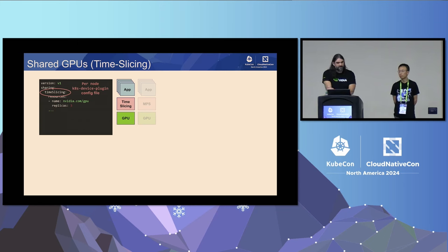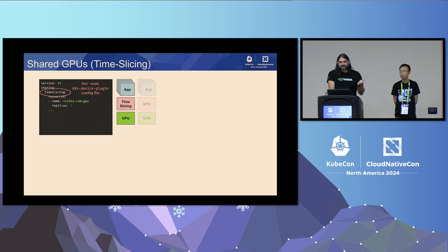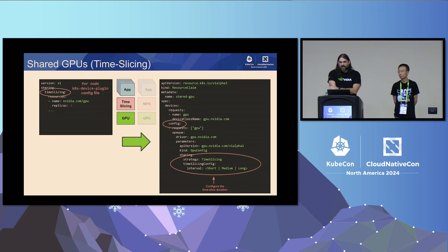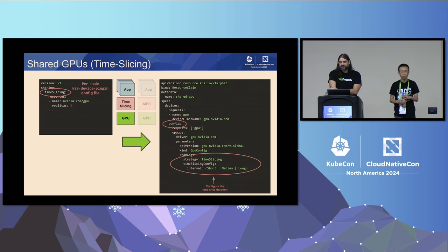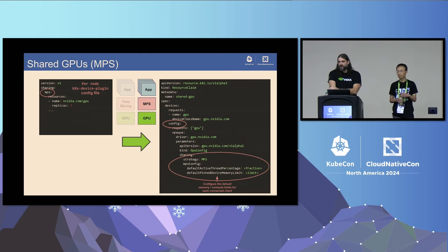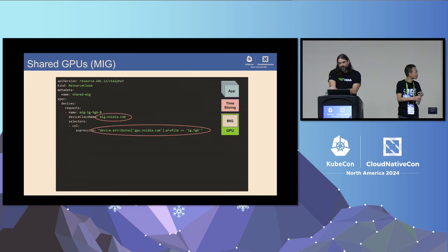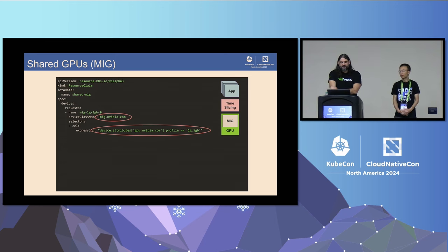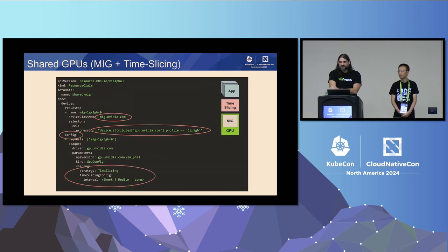In terms of time slicing versus MPS, the existing device plugin model uses a per-node config. With DRA, you can have a per-resource-claim config so that when a GPU is bound to your claim, you can specify whether you want time slicing or MPS set up with the limits you want. It's no longer left up to the system — you can precisely control how things are shared. This also layers on top of MIG, so you can request a MIG device and configure time slicing or MPS on top of it.